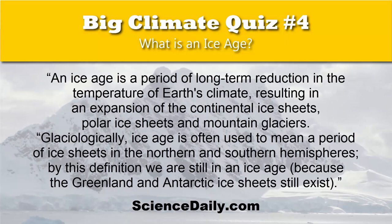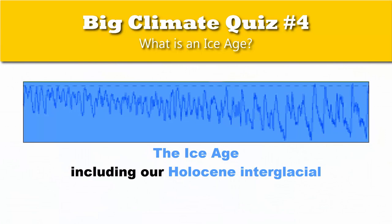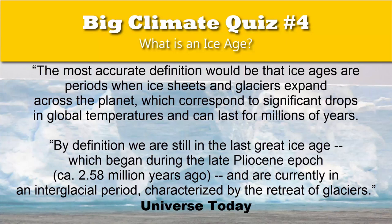However, ScienceDaily.com says: "An ice age is a period of long-term reduction in the temperature of Earth's climate, resulting in an expansion of the continental ice sheets, polar ice sheets, and mountain glaciers. Glaciologically, ice age is often used to mean a period of ice sheets in the northern and southern hemispheres. By this definition, we are still in an ice age, because the Greenland and Antarctic ice sheets still exist." This gives us a markedly different picture of the ice age, which includes our current interglacial, the Holocene.